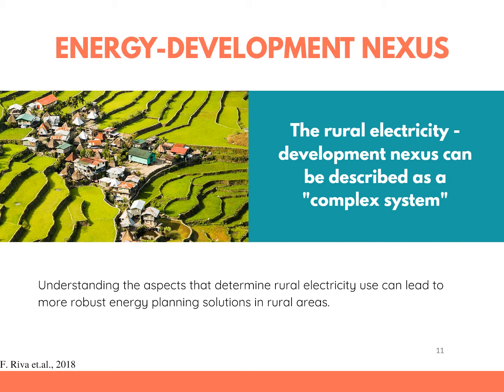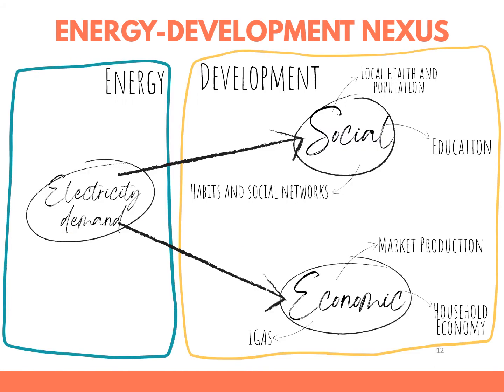In their paper, they suggested that a causal loop diagram approach on visualizing the relationship of electricity and development must be applied. They pointed out that the economic and social dimensions of sustainable development are prevalent when it comes to linking energy, especially electricity demand, and mapping out the relationships. The next six slides are the causal loop diagrams mapped out by the paper linking the electricity demand to the different components of the economic and social dimensions. Feel free to pause on each slide.